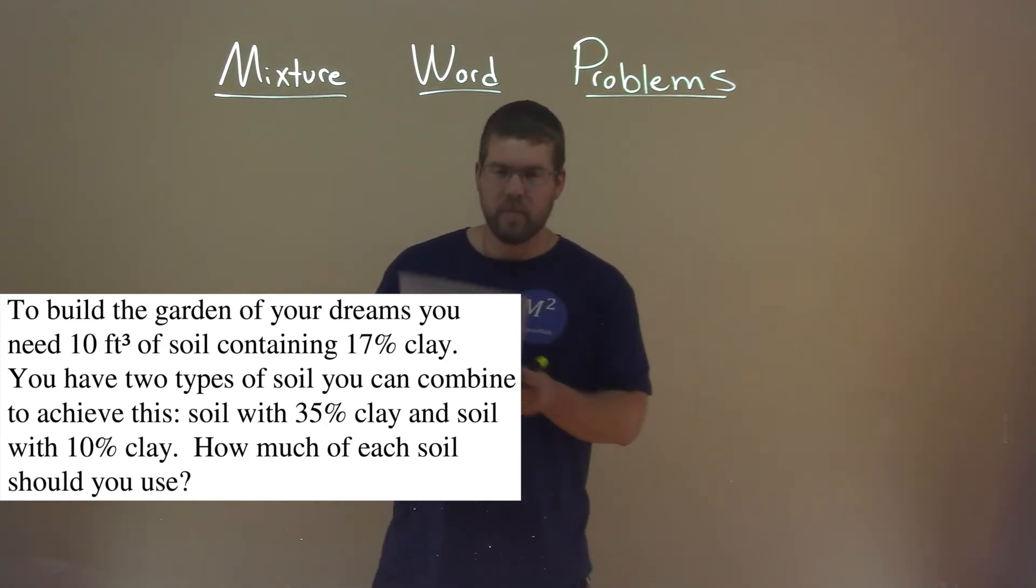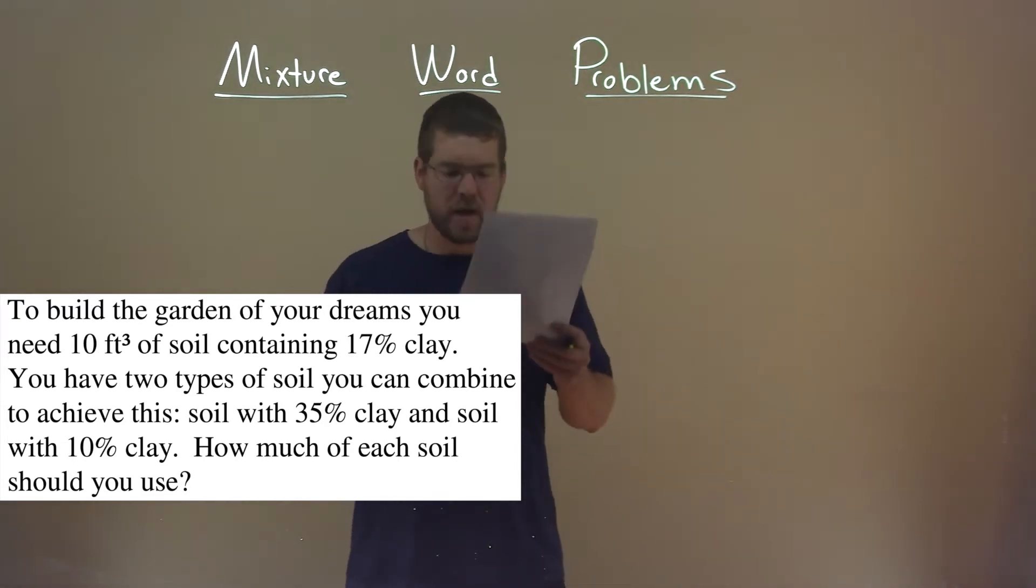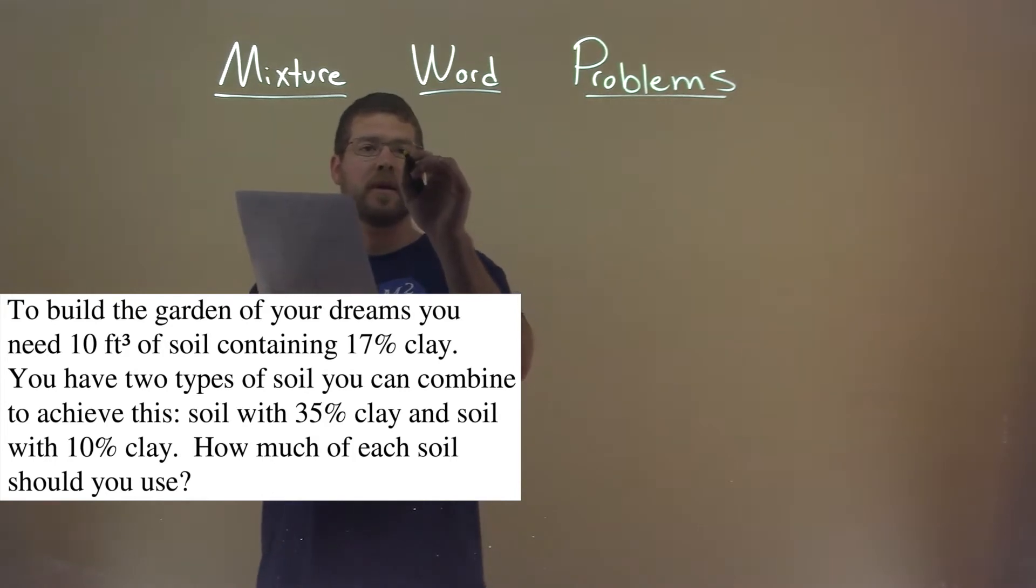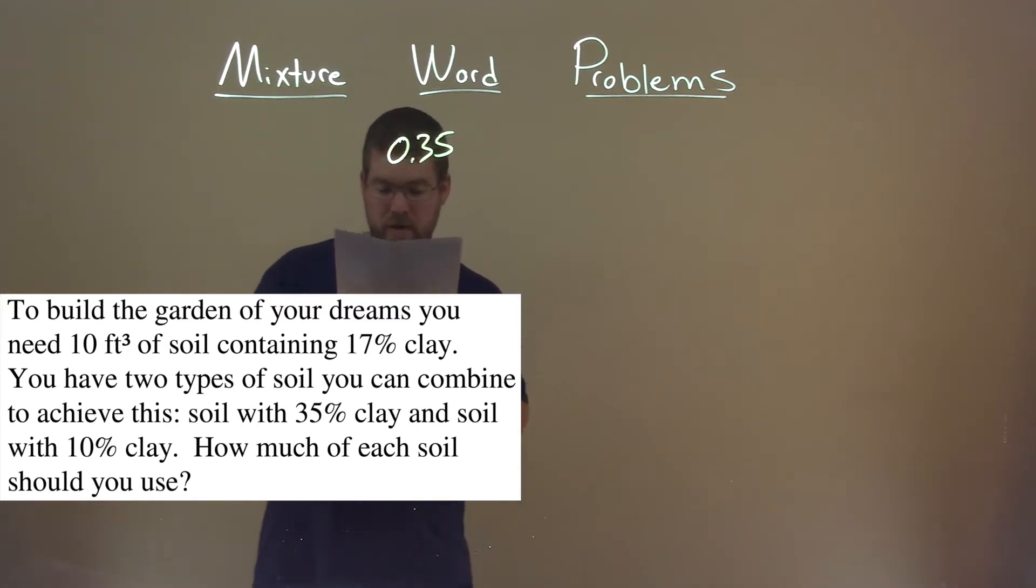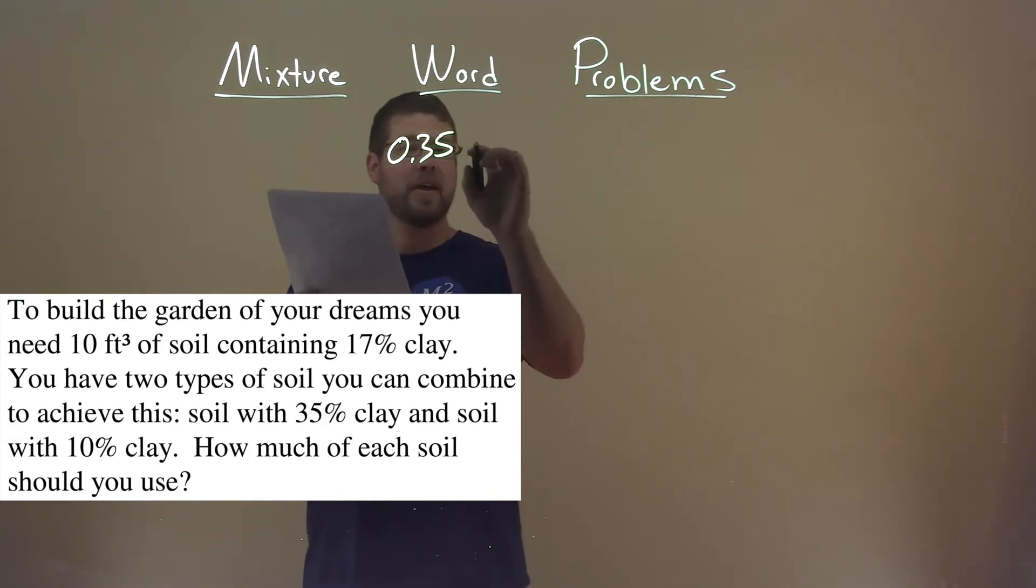So let's set up an equation here first for the mixture combination. So we have one soil, which is 35% clay, so it has a decimal at 0.35. And let's give that soil, the amount of that soil, a variable. Since this is the higher mixture of the percents, I'm going to call it M for more.